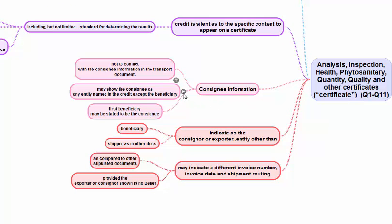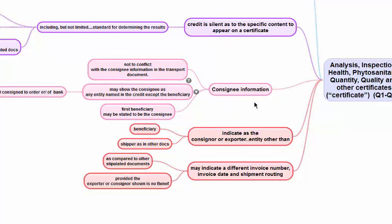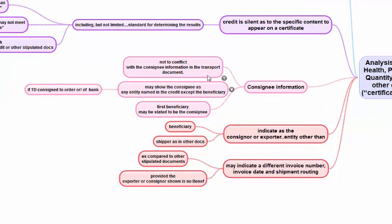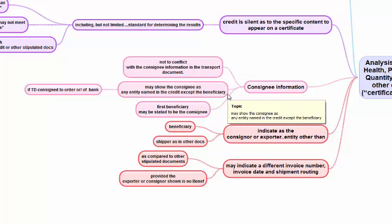Regarding consignee information: it should not conflict with the consignee information of the transport document. If the transport document is consigned to party A, the certificate should also not conflict with that. The certificate may show a consignee as any entity named in the credit except the beneficiary — since the beneficiary of the credit is the shipper. If the transport document is consigned to the order of the bank, any entity in the credit other than the beneficiary can be named. If it is not consigned to the bank, any information not in conflict with the transport document is acceptable.